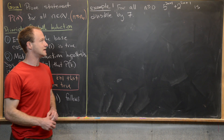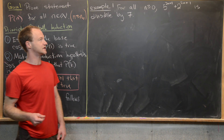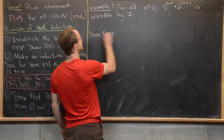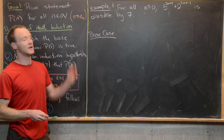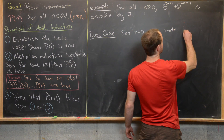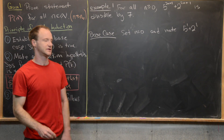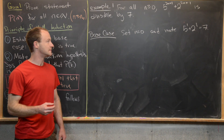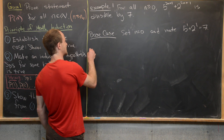Our first example says: for all N ≥ 0, the number 5^(2N+1) + 2^(2N+1) is divisible by seven. Let's check the base case with N = 0. We get 5^1 + 2^1 = 7, which is clearly divisible by seven. So the base case is true.